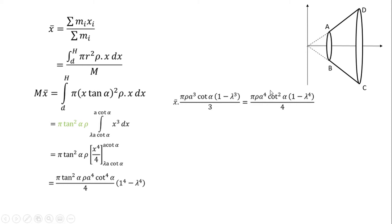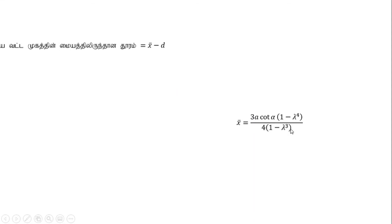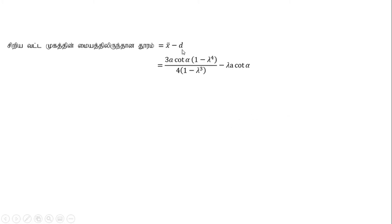So this is pi rho a3, and x bar is equal to the power 4. We also have x bar times m to the power 4. If it gives 1 minus lambda, 1 plus lambda, 1 plus lambda squared.